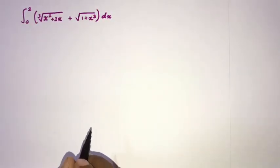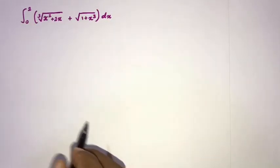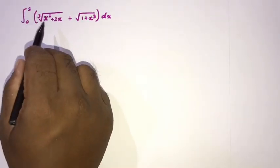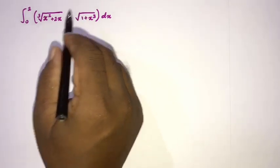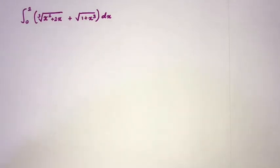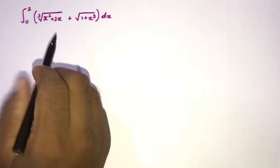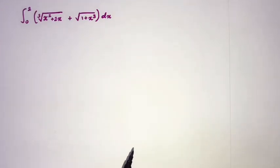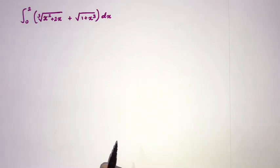Welcome to the Mathematics MI channel. In this video we are going to solve this advanced integral: the integral from 0 to 2 of the cube root of x squared plus 2x, plus the square root of 1 plus x to the third power, dx. If you try using a substitution or integration by parts, it's a little bit hard — you cannot evaluate it that way.